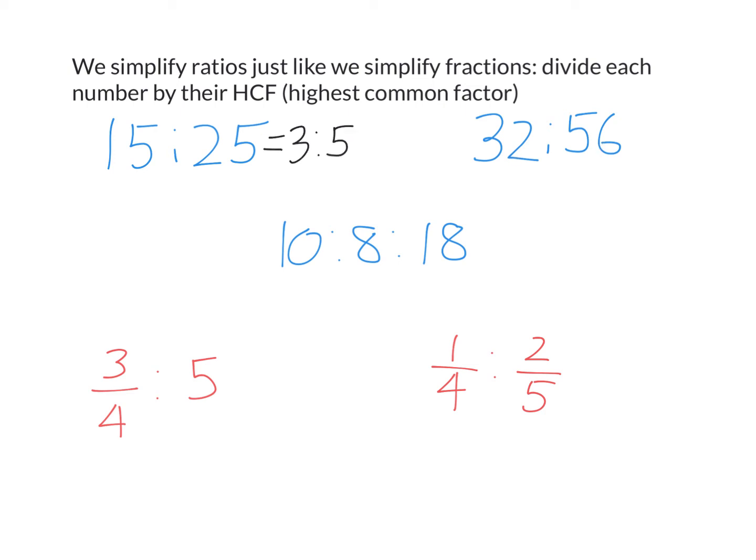32 to 56. So the highest number that goes into both of these is 8. So we divide 32 by 8 and we divide 56 by 8. So our answer should have numbers with no common factor. So 4 and 7 have no common factor other than 1, so we know we've done something right.